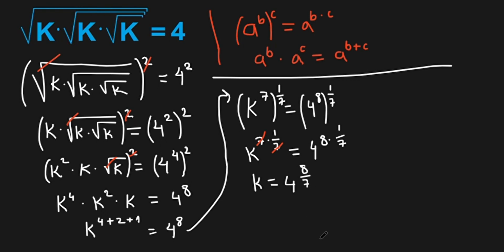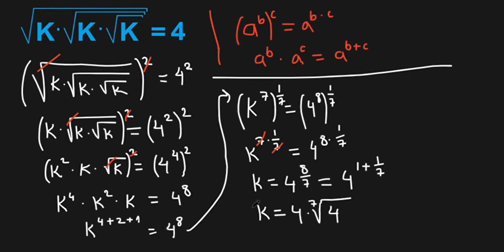Or we can write it as 4 to the power of 1 plus 1 over 7. So this means k equals 4 times the 7th root of 4. And this is our result.